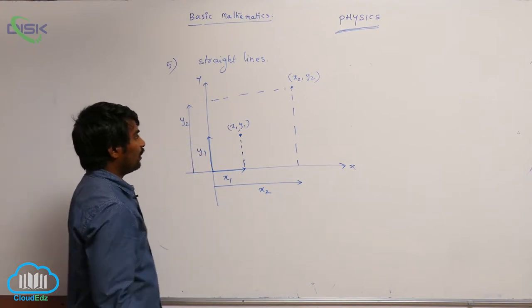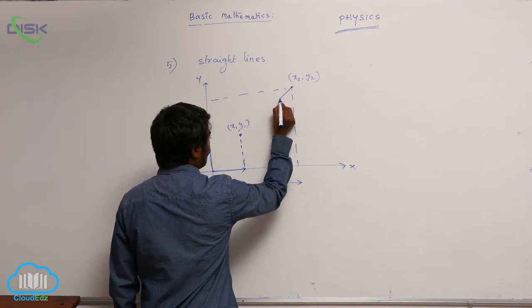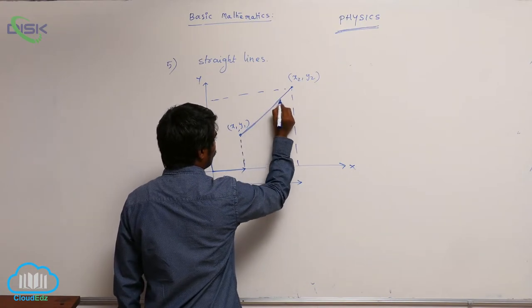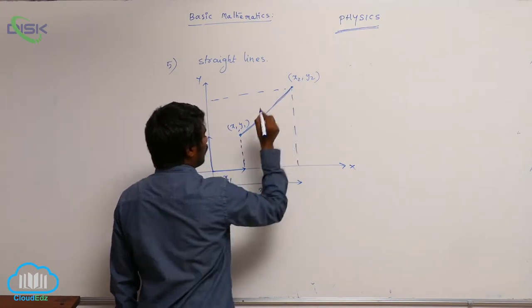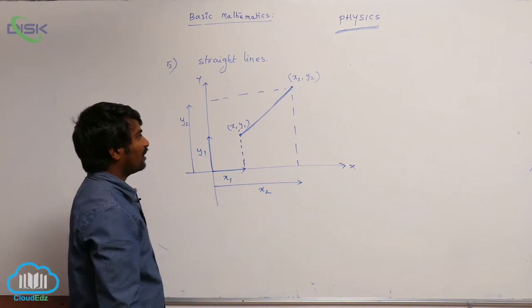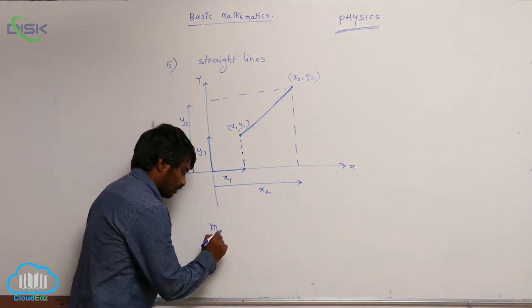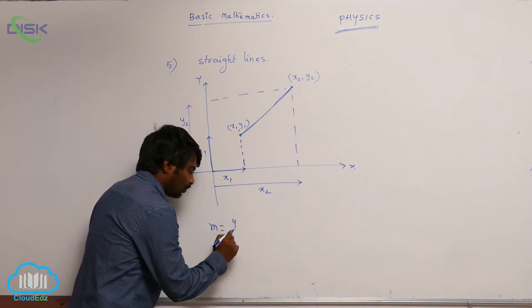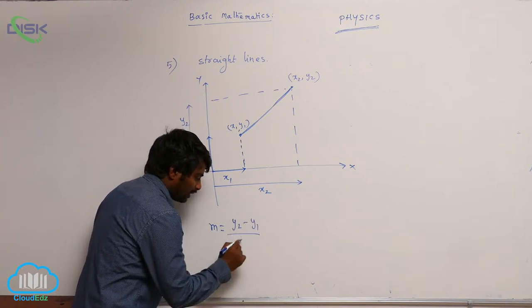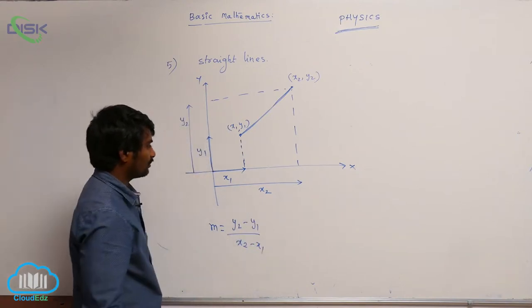If I join these two points with a straight line, the slope of this straight line is y2 minus y1 divided by x2 minus x1.